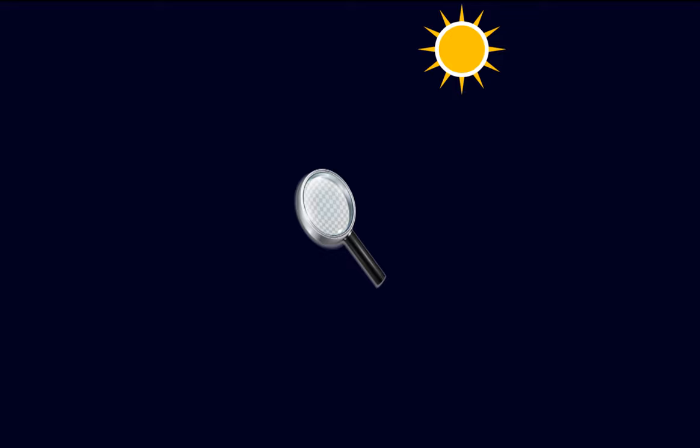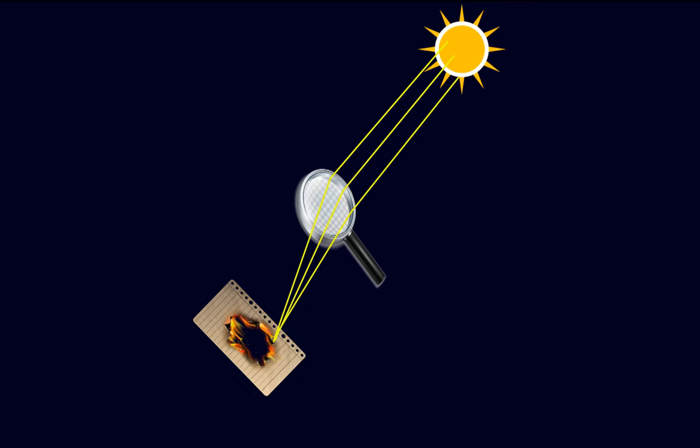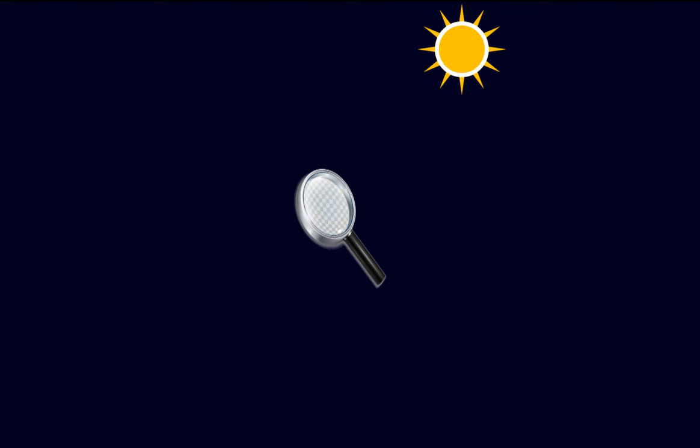Let's understand the next term through an activity. Try converging sunlight onto a sheet of paper by directing the reflecting surface of a concave mirror towards the sun. Why does the paper burn? It is because the parallel rays of light from the sun converge at a single point. This point is called the principal focus of a concave mirror.